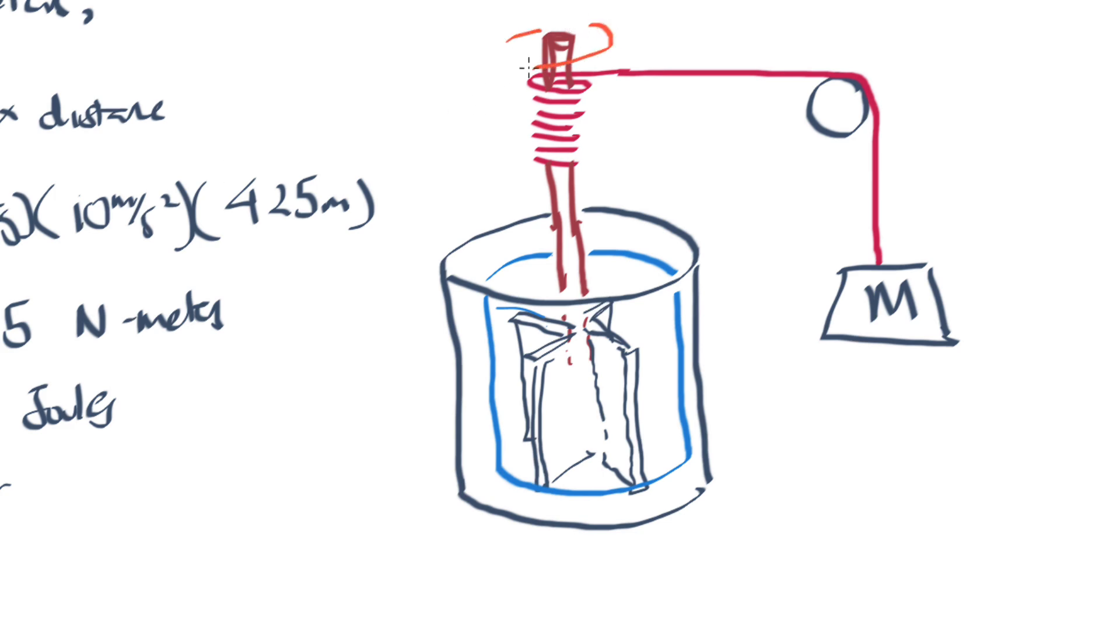So, this shaft would rotate around in this direction, as it fell, and these fins would then, of course, spin around, and they would churn the water. And while they were churning the water, the water would heat up a bit. Not much, but it would heat up a little bit.